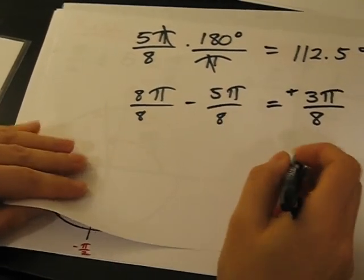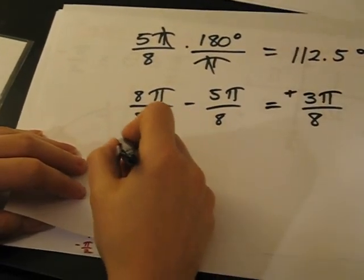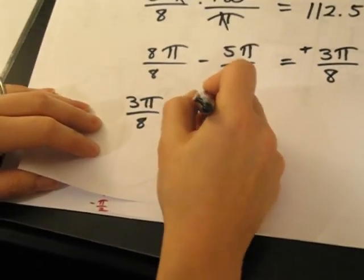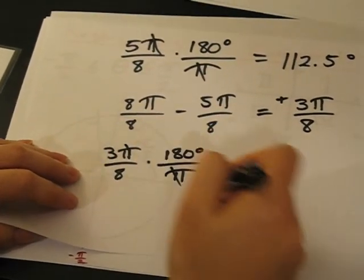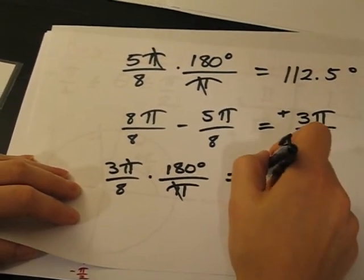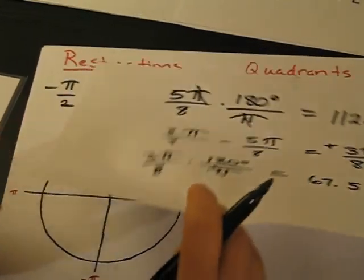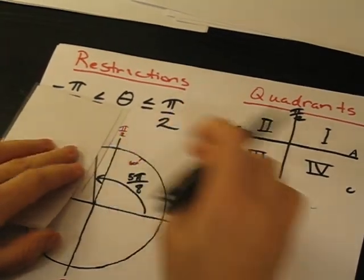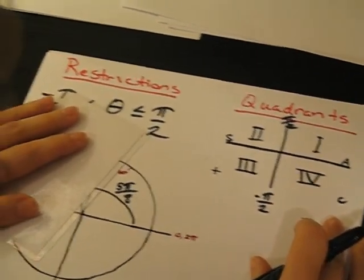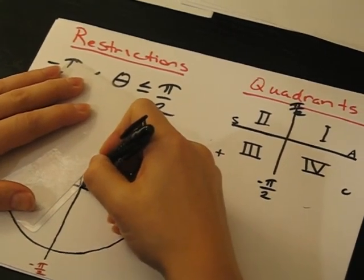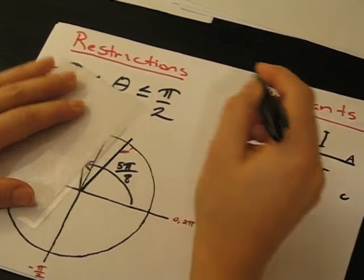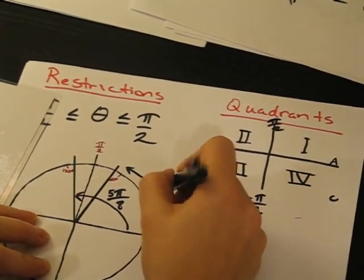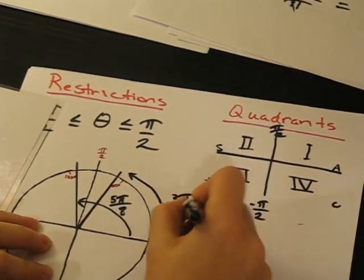I like to convert to degrees. It makes it easier for me to see it and to put it onto a unit circle. So 3-pi over eight equals 67.5 degrees. Here's your 60 degrees, so it's a little bit more than that. That's our new angle. It's positive 3-pi over eight.